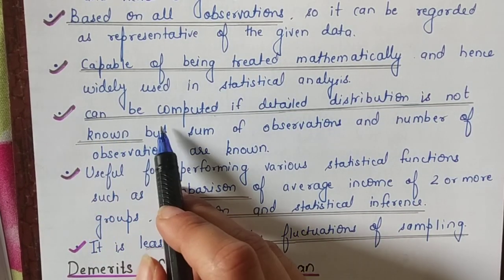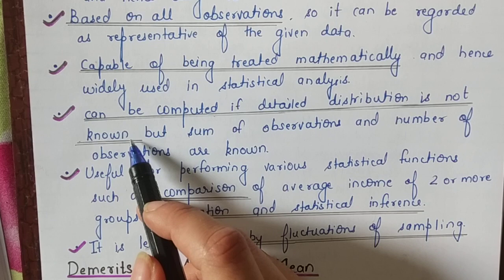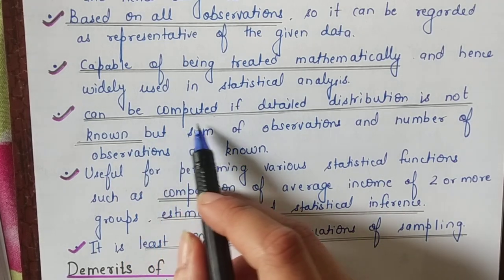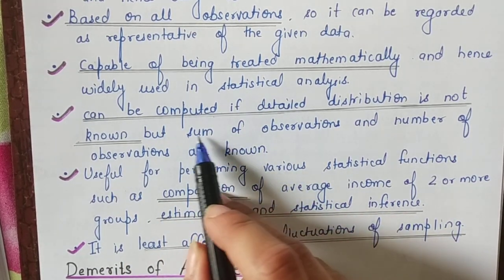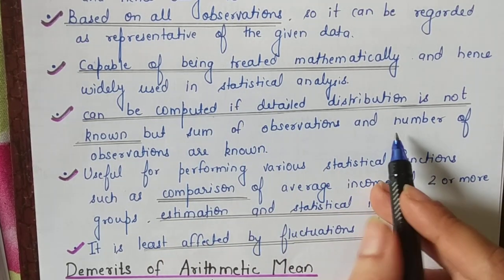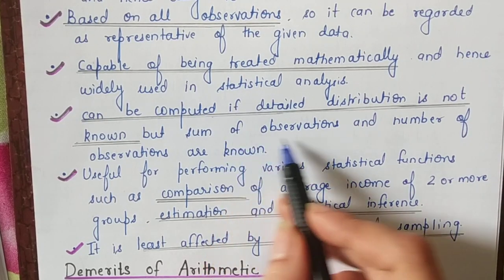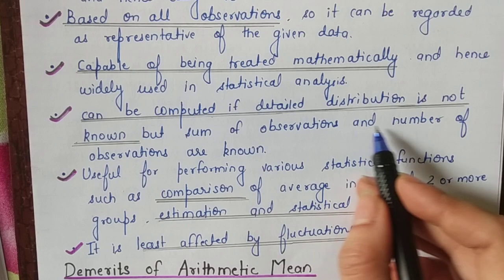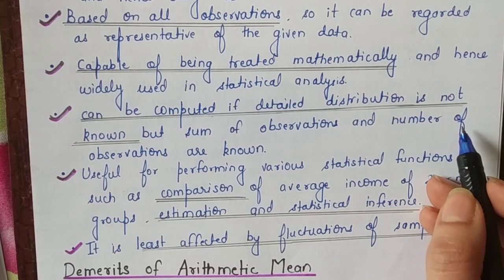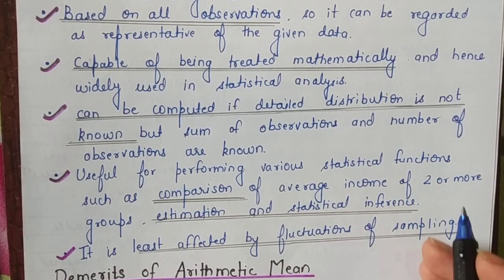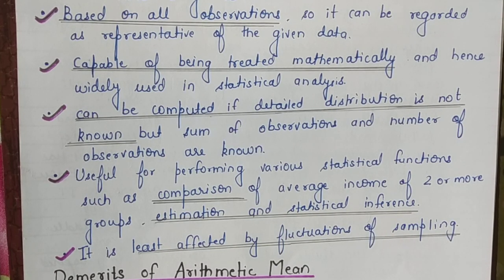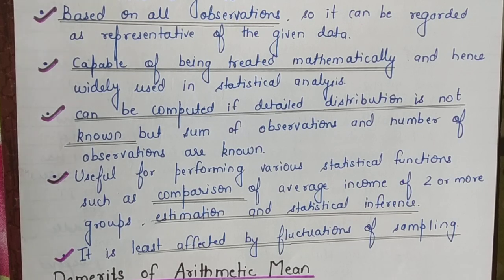Number five: arithmetic mean can be computed even if the detailed distribution is not known. If you know the total marks of a class and you know how many children are in the class, that's it — you are sorted. You don't need the detailed distribution. If you know the total and the number of items, the mean calculation can be done.